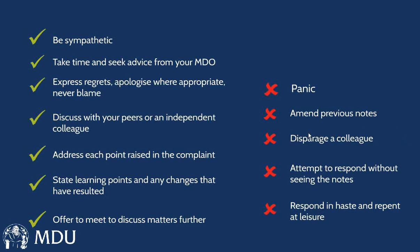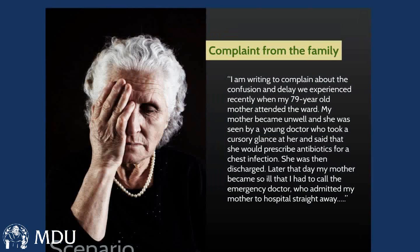Don't disparage a colleague. It's perfectly reasonable to give a factual account of others' involvement — for example, referring to discharge summaries or correspondence from a colleague — but try to deal with that in a factual way. Try to avoid responding without seeing the notes, because often there is time pressure. If you say something that isn't quite compatible with the records, the complainant can infer a conspiracy when it's just a simple mistake, and that can be very difficult to undo. I've seen cases where someone responded quickly and it took a long time to undo even a minor error.